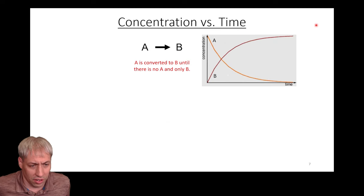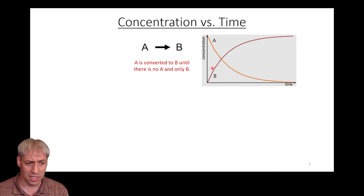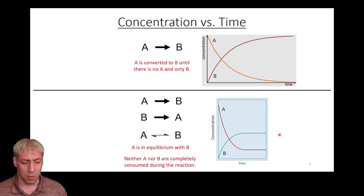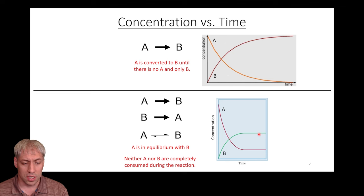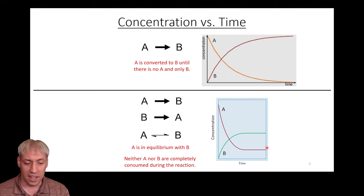What does this look like graphically? Previously, for a simple A-to-B reaction, A basically disappears and B reaches maximum concentration. In an equilibrium reaction that doesn't heavily favor reactants or products, both directions are happening. You start with only A, A goes down and B grows in, but A doesn't disappear and B doesn't take over entirely — neither is completely consumed. They reach a steady-state condition with certain equilibrium concentrations, even though individual atoms and molecules are still changing.